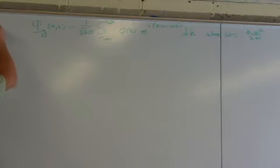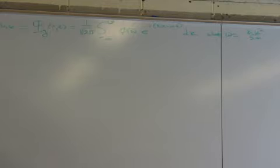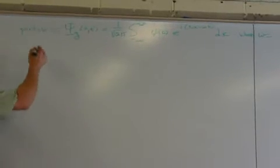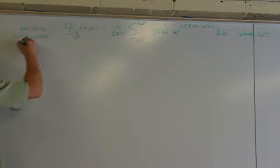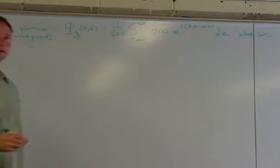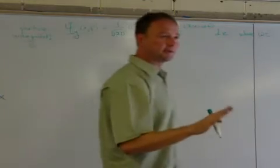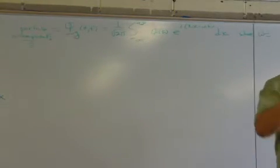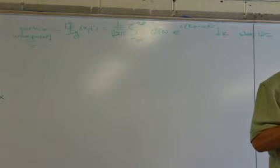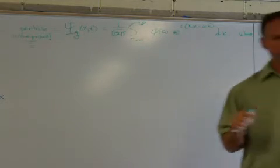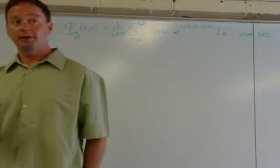From minus infinity to plus infinity of psi of k, e to the i, kx minus omega t, dk, where omega equals h-bar k squared over 2m. Where did that come from? That came from the Schrodinger equation and everything else. That's exactly right. That came from the very starting point when we solved for the free particle. And we started off with Schrodinger's time-independent equation. We got the differential equation. We got a k. That's where that k came from.